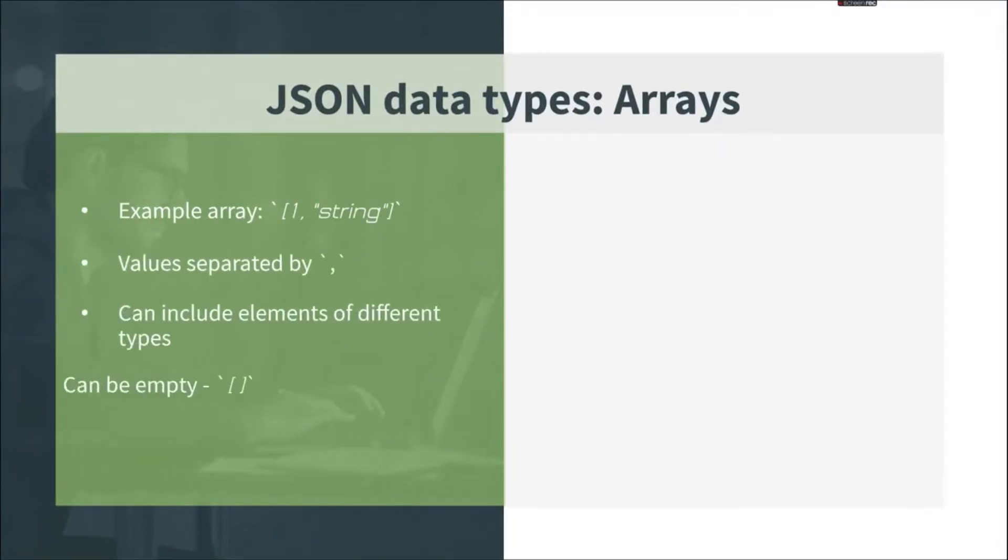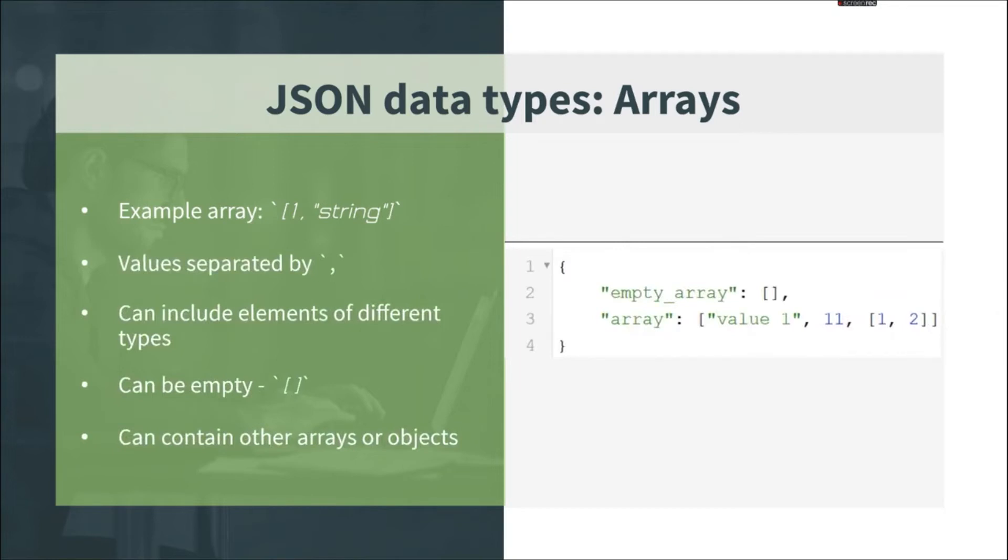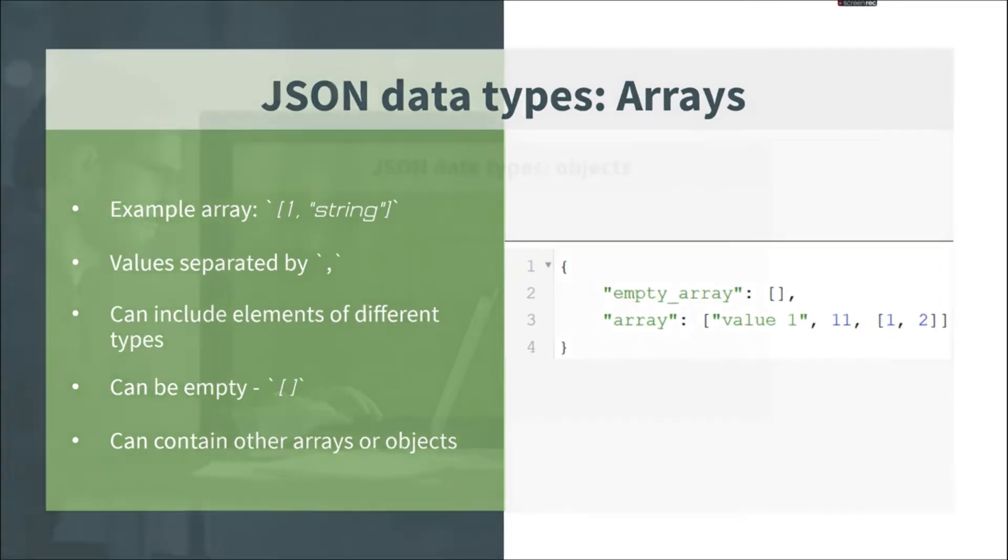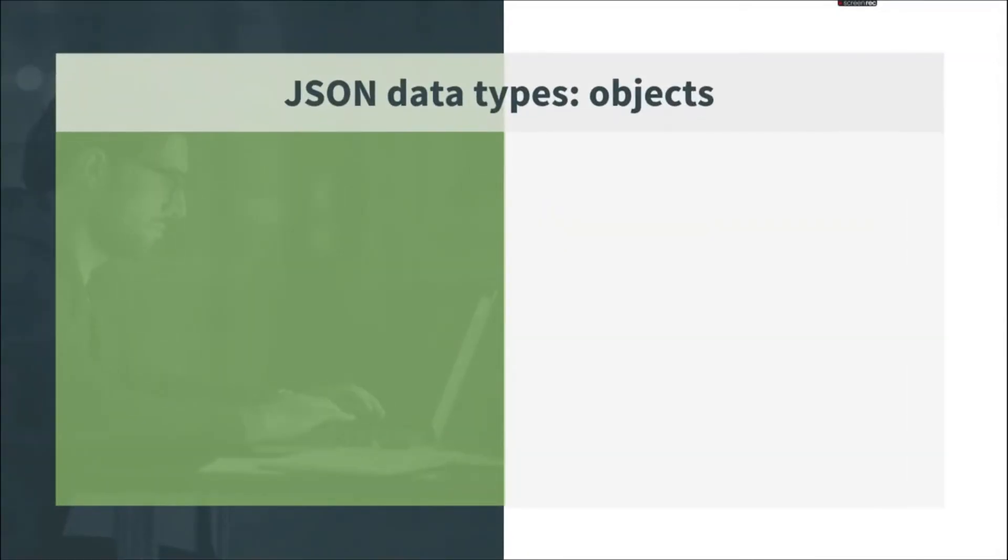Finally, array data type. Array is an ordered collection of elements which can be of any type, including arrays and other objects. Array starts with square bracket and ends with a square bracket. Array elements are separated by commas.